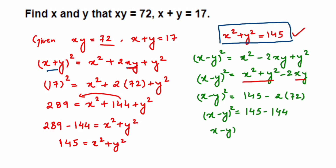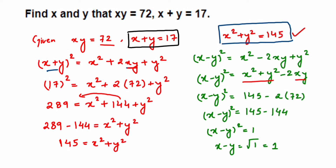So (x − y)² = 145 − 144 = 1. Taking the square root: x − y = √1 = 1. We now have x − y = 1, and we already know x + y = 17.